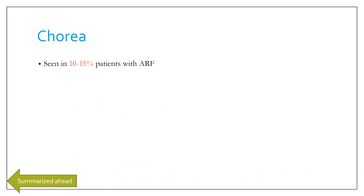Chorea is seen in around 10 to 15% of patients with acute rheumatic fever only. It is a late symptom, such that you may not be able to establish a temporal relationship with group A beta-hemolytic streptococcus infection, because the antibody titer would already have declined by the time it occurs.